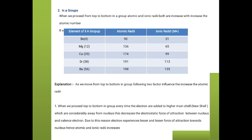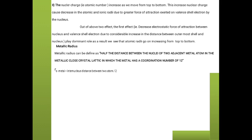As the distance between the nucleus and that outermost electron increases, the electrostatic force of attraction decreases. As we proceed from top to bottom in groups, electrons are added to higher main shells or new shells, which are considerably further from the nucleus. This decreases the electrostatic force of attraction between the nucleus and the valence electrons. Due to this, electrons experience a lesser and lesser force of attraction toward the nucleus, hence atomic and ionic radii increase.